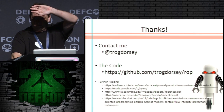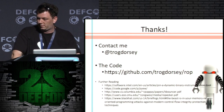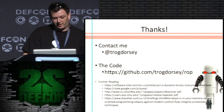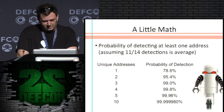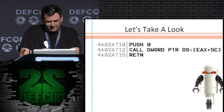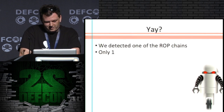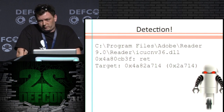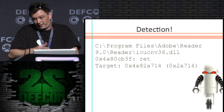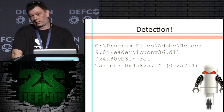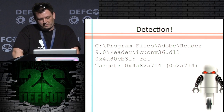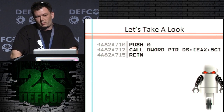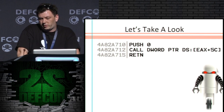I can't see a thing. I got a ton of time, so I can go back. I talk fast, I apologize. One thing to note here: the ICU CNV 36 — that's used a lot because it's not ASLR'd. So in the 9.X series, most attacks against Adobe 9.X will use this. The other ones, there were some indirect calls I could detect as well, so it wasn't just returns.